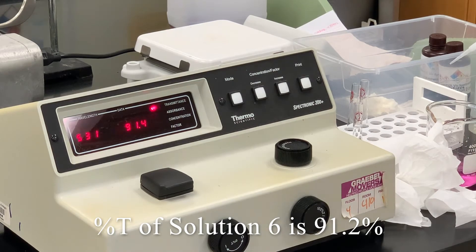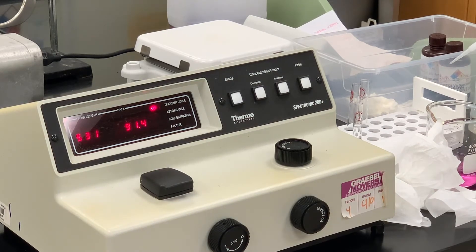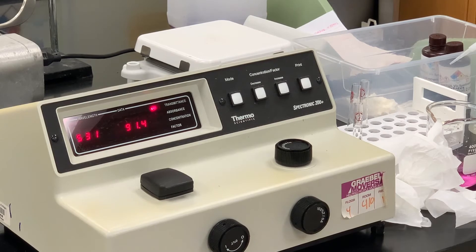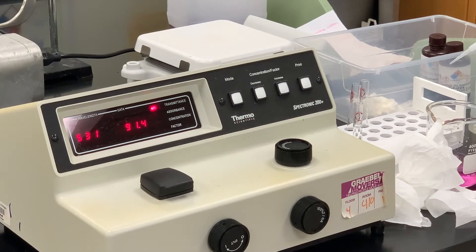I should also say that in terms of using the spec 20 spectrophotometer, typically the best percentages of transmittance should be in the range of somewhere between 10 and 90. If you get much lower than 10 or much higher than 90, it's not quite as accurate.